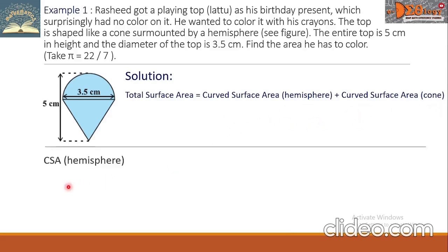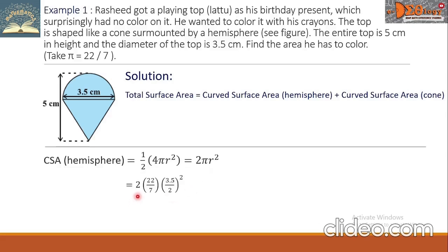The formula for the hemisphere is one-half of the sphere, which is 4πr², simplified to 2πr². Substituting values: 2 × (22/7) × (3.5/2)², since the diameter is 3.5 and the radius is 3.5 over 2. Squaring and simplifying gives an answer of 19.25 square centimeters.